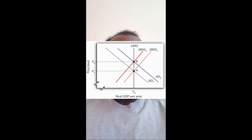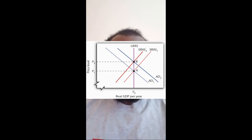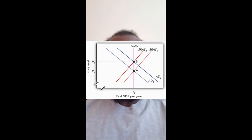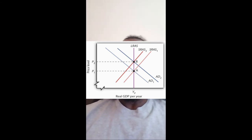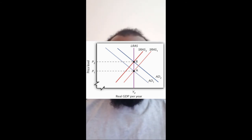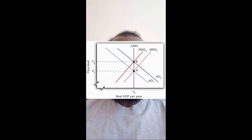For example, employees expect expansionary policy to shift the aggregate demand curve to the right and cause stronger inflation, so they demand higher wages in return, offsetting the aggregate demand curve shift with a leftward shift of the aggregate supply curve — which just leads to higher rates of inflation with no real change in output in the long run. This theory is debatable, though, as behavioral economics has shown that humans are anything but rational actors in their economy.